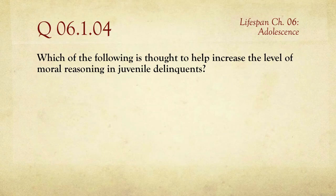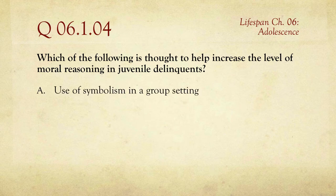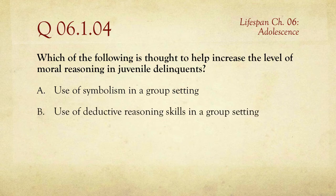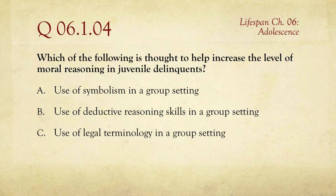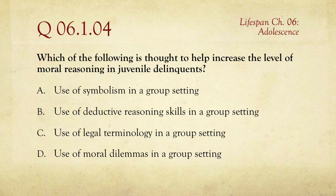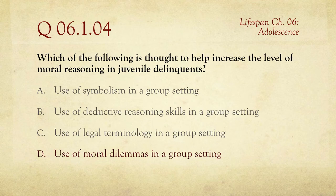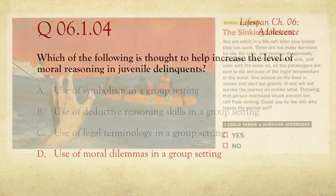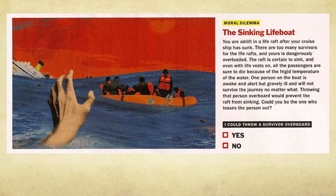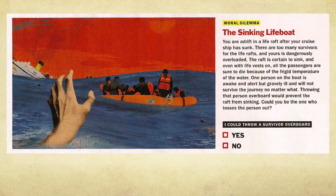Question number four: which of the following is thought to help increase the level of moral reasoning in juvenile delinquents? The choices are use of symbolism in a group setting, use of deductive reasoning skills in a group setting, use of legal terminology in a group setting, or use of moral dilemmas in a group setting. Group setting is consistent across all choices. The research supports the use of moral dilemmas in a group setting. We've talked about the Heinz dilemma. Here's another interesting one: the sinking lifeboat — basically, someone on the boat is going to die, and would you throw them overboard to save everybody else?